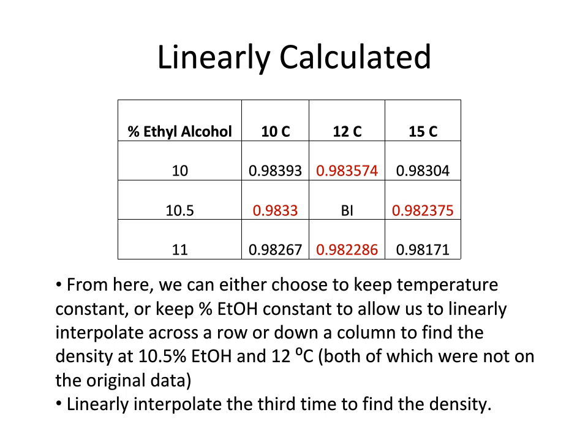So the trick is, especially for interpolating with percent alcohol constant, is that you have to make sure you keep your x's and y's correct. So I ran into that problem when I was first doing the calculation, where I forgot to change my x to the 10 degrees Celsius and 15 degrees Celsius. But if you didn't get these values, go back and check your work. Make sure you know how to do linear interpolation. But these are the values you should have gotten.